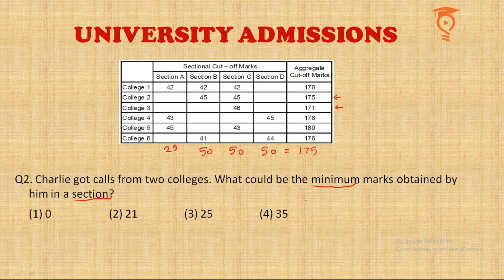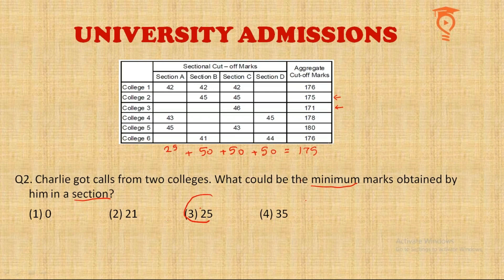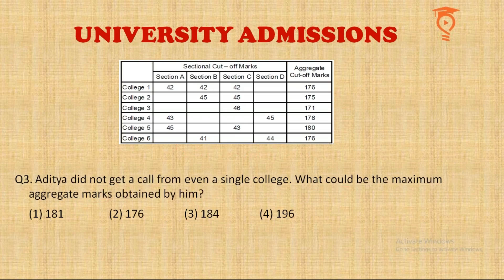The answer is 25 — that is the minimum possible score in a particular section. Some might ask why I chose to minimize section A specifically. I could equally have maximized section A and minimized section D, since the question only asks for the minimum in 'a section,' not a named one. The section to minimize can be chosen freely.